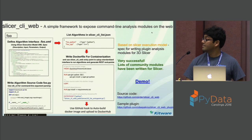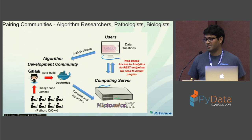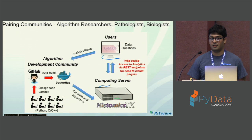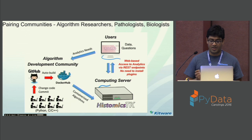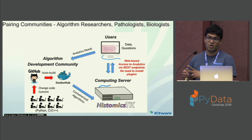This gives a nice platform that pairs different kinds of communities. The pathologists and biologists have data questions. The algorithm researchers get analytics needs from that community, develop their algorithms, use Docker, and use our mechanism to push to Docker Hub. Then we can host it on the website from where the pathologists and biologists can access all the analytic solutions, compare between them, and choose.